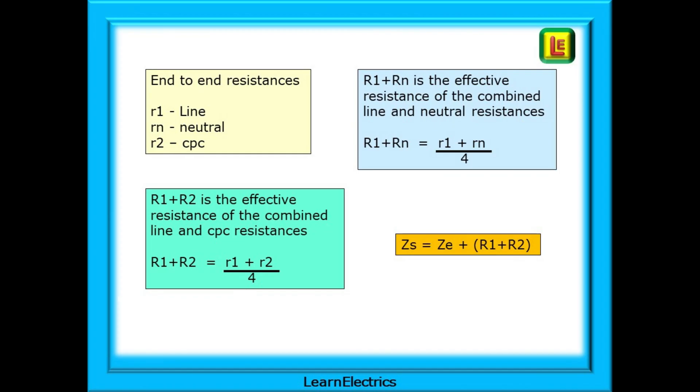And a quick reminder of those formulas, the end-to-end resistances are written with little r's, little R1, little Rn, and little R2. The effective resistances are parallel resistances for a ring circuit, and are written with big R's. Memorize the three formulas shown here before your assessment.